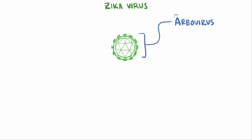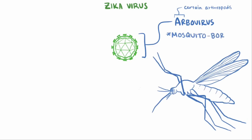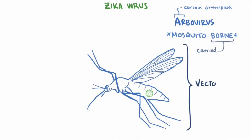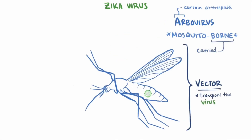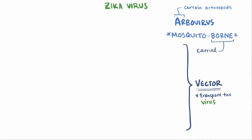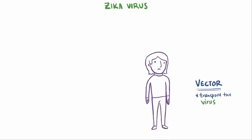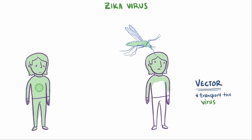Zika virus is an arbovirus, meaning it's transmitted via certain arthropods, specifically mosquitoes, so it's a mosquito-borne virus. 'Borne' means carried or transported. Sometimes we call organisms like this vectors, where all they do is transport the virus. So with Zika virus, just like other mosquito-borne viruses like dengue fever, yellow fever, Japanese encephalitis, and West Nile virus, the mosquito acts as a vector that transmits the virus from one person to the next. These viruses are all in the genus Flavivirus.